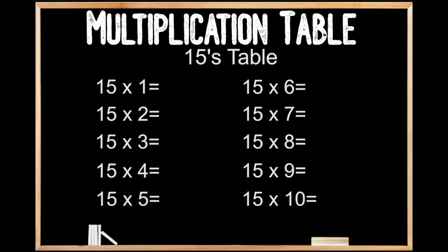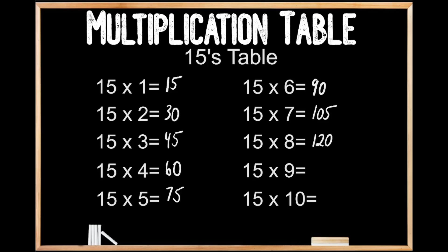15's table. 15 times 1 is 15. 15 times 2 is 30. 15 times 3 is 45. 15 times 4 is 60. 15 times 5 is 75. 15 times 6 is 90. 15 times 7 is 105. 15 times 8 is 120. 15 times 9 is 135. And 15 times 10 is 150.